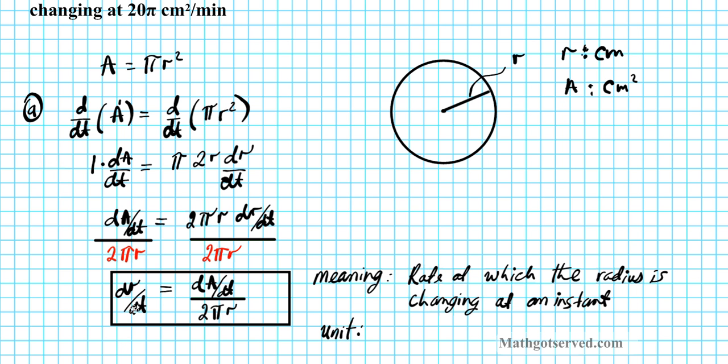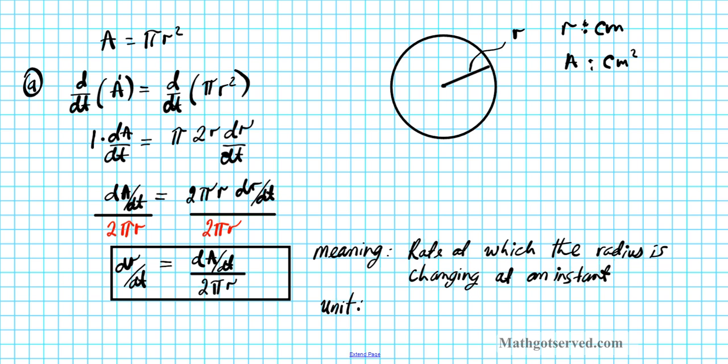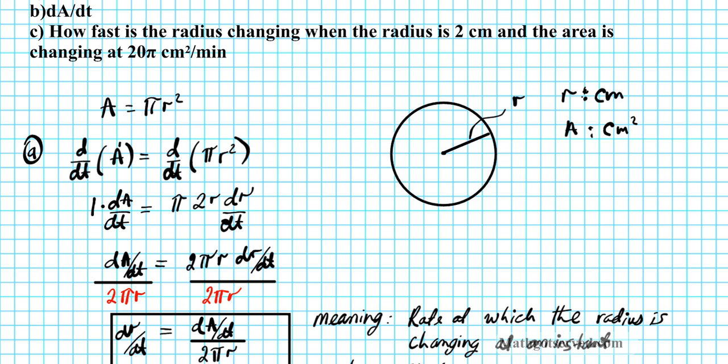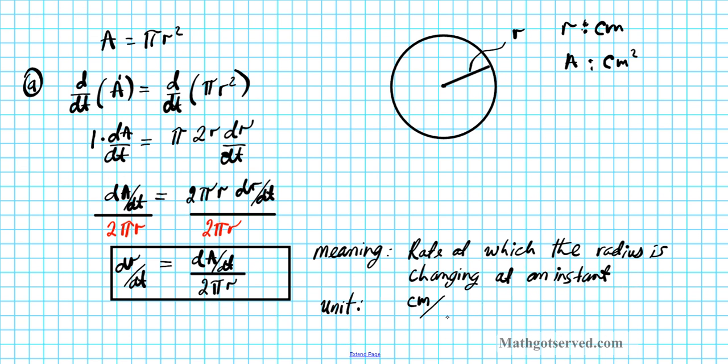So the unit here is going to be, we're looking for dr/dt. That's simply going to be radius is centimeters, and then time is, if you go to this problem here, it's in minutes. So centimeters per minute. So this is how fast the radius is changing, dA/dt over 2 pi r centimeters per minute.